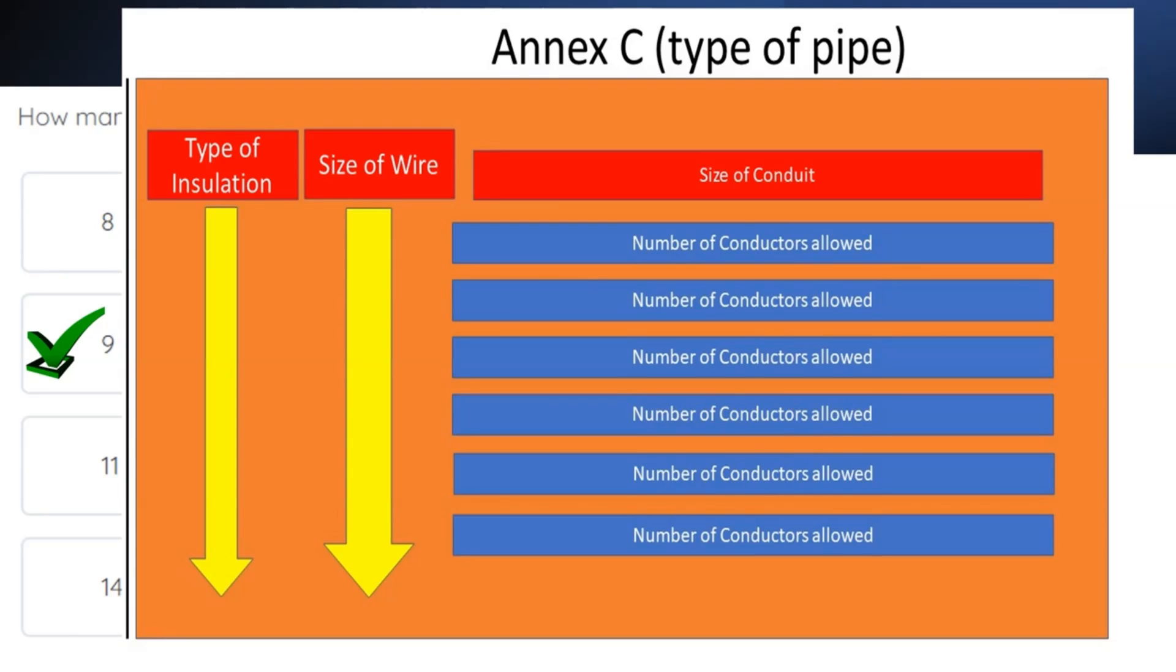When we verify that we're in the right table, we're going to start on the left-hand side until we find our installation type. Then, when we find it, we're going to come over and make sure that our wire size is listed. Then, we're going to come over and find our size of conduit, come down and tee off, and find the number of conductors allowed.